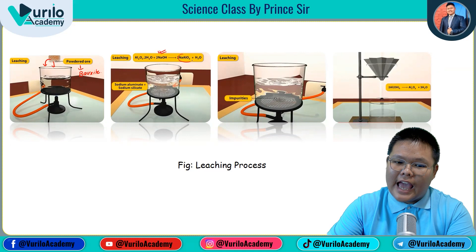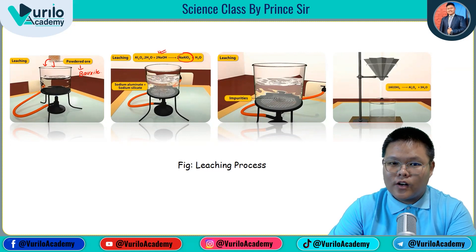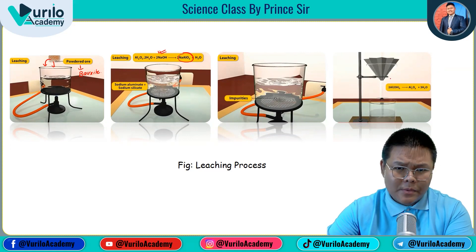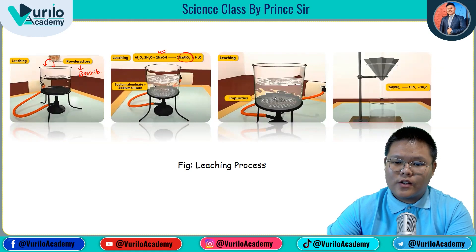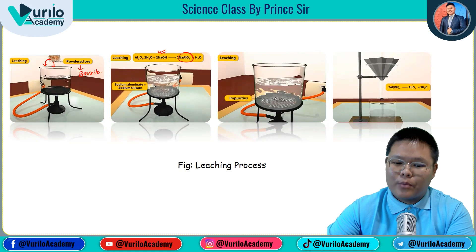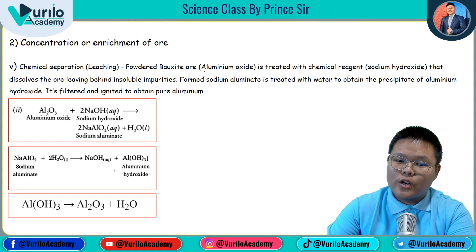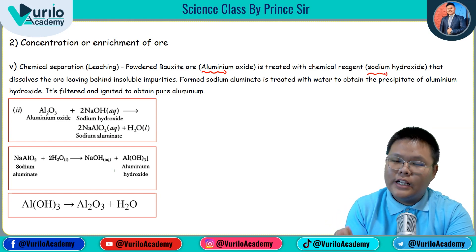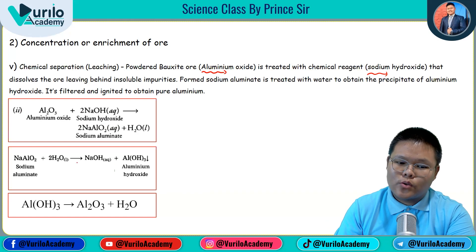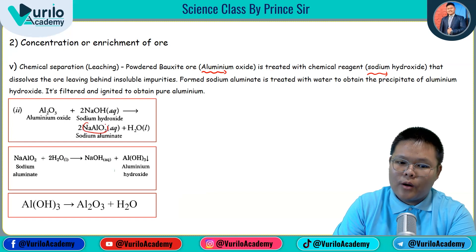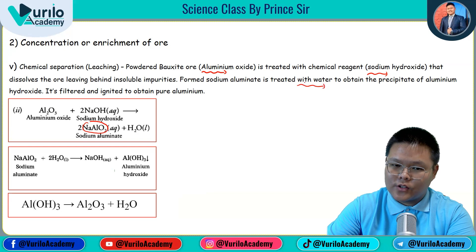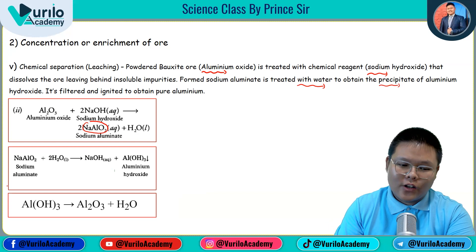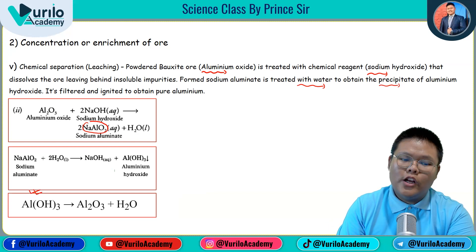Sodium hydroxide reacts with the powder ore bauxite (aluminium oxide, Al₂O₃). The reaction of Al₂O₃ with sodium hydroxide in the presence of heat gives sodium aluminate (NaAlO₂). Further reaction of sodium aluminate with water produces a precipitate of aluminium hydroxide, Al(OH)₃.